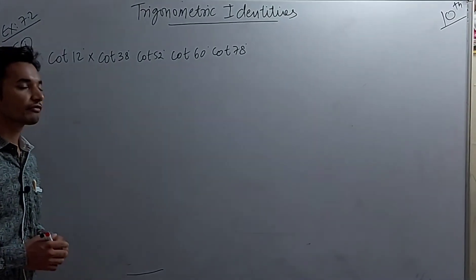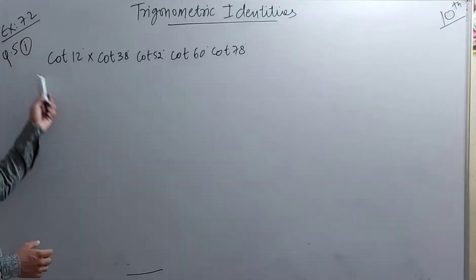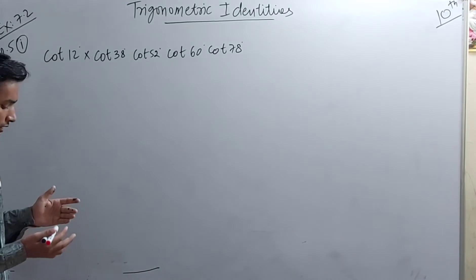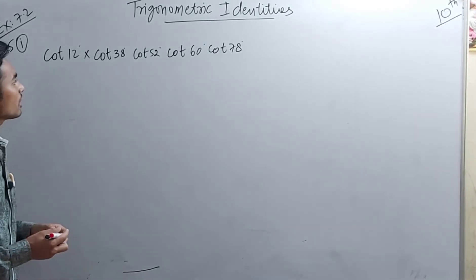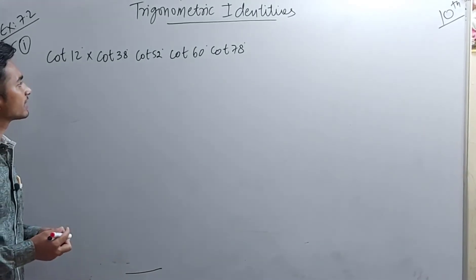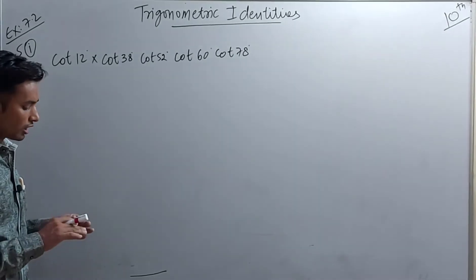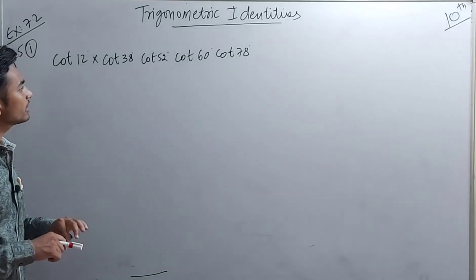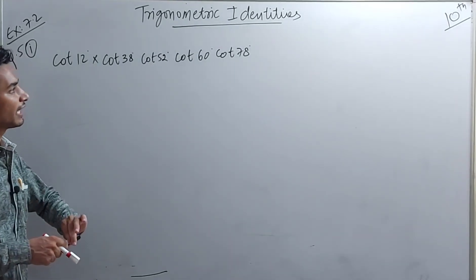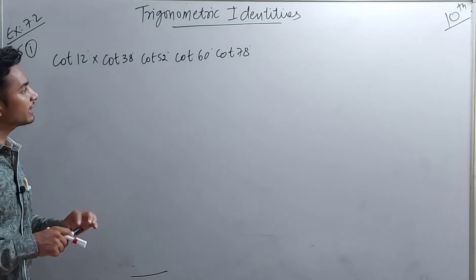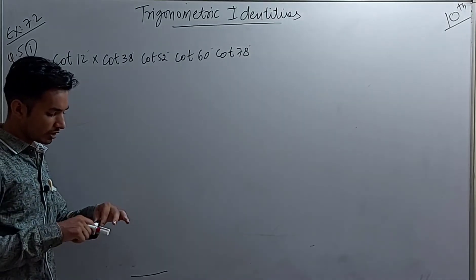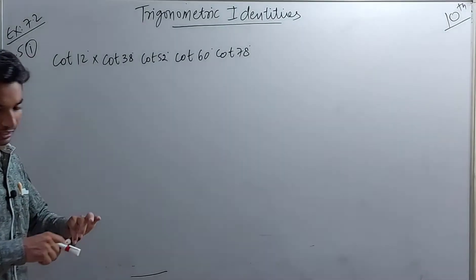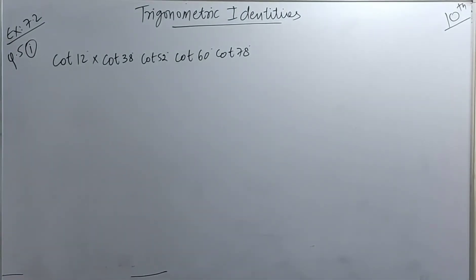Let's start with question number 5, first part. Here we have cot 12° multiplied by cot 38°, then cot 52°, cot 60°, and finally cot 78°. We have to find the value of this entire expression.